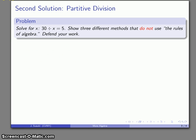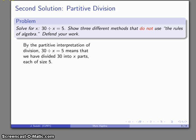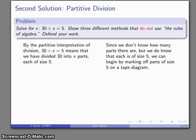So is there a different way we could look at this? Sure, we might take a look at this as a partitive division problem. By our partitive interpretation of division, 30 divided by X equals 5 means that what I've done is I've divided 30 into some number of parts, each of which has a size of 5 units. And since I don't know how many parts there are, but I do know how big each part is, I can begin marking off parts of size 5 on a tape diagram.